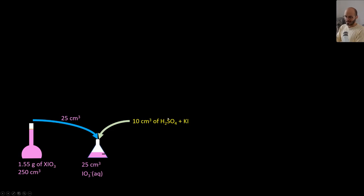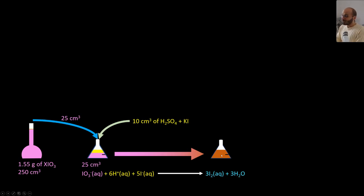Mix it with an excess of acidified potassium iodide to get this reaction where you get iodine and water. All right, so now you are going to titrate this iodine using S₂O₃²⁻, which is thiosulfate.